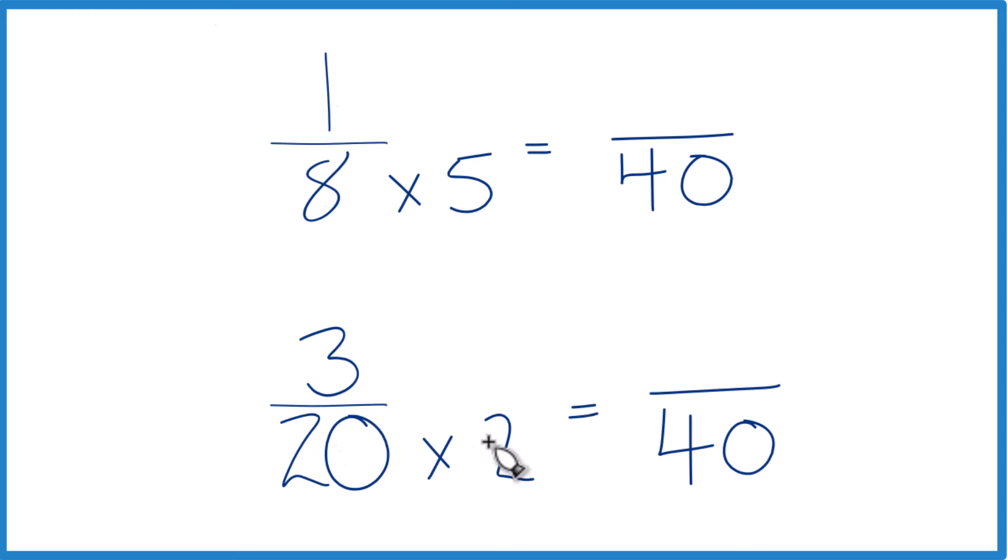But I can't just multiply the denominator by 2 here, I also need to multiply the numerator by 2. 2 over 2 is just 1. So we multiply by 1, we don't change the value, just the way it's represented. 3 times 2 is 6.